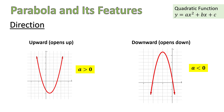Well, that depends on the value of a. a is the number that stands in front of x squared, so it's the coefficient of that term. Now if that coefficient is positive — that is, a is greater than zero — then the graph of that function will be an upward parabola. However, if a is a negative number, in other words less than zero, then the graph of such a function is a downward parabola.